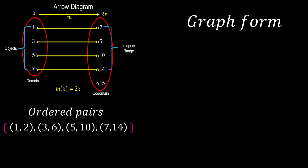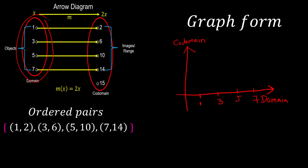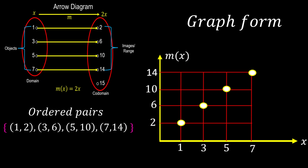Lastly, we can also represent our function in graph form. In the graph, remember that the x-axis is usually our domain and the y-axis is usually our codomain. We take all values from our domain on the x-axis and the codomain on the y-axis, then plot the coordinates. Once we plot them all we are done. In the final graph, the x-axis covers all our domain values and the y-axis covers all our codomain values: 1 maps to 2, 3 maps to 6, 5 maps to 10, and so on.